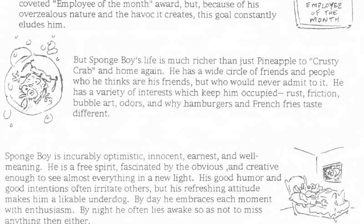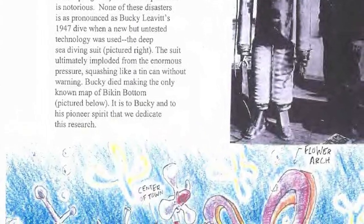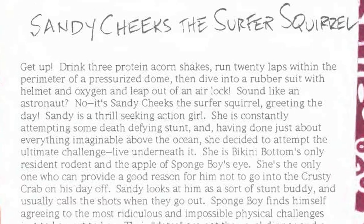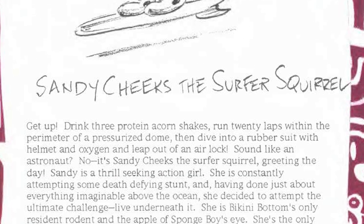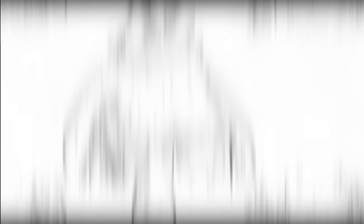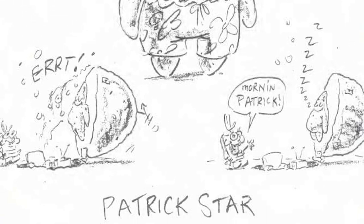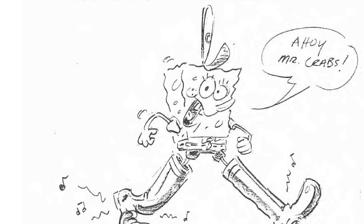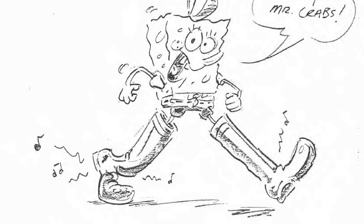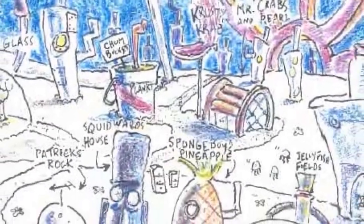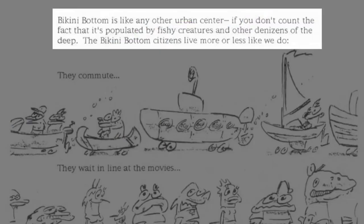As of very recently, Spongebob's pitch bible was revealed to the public. This thing is full of ideas that didn't make it into the final show. For example, the Krabby Patty was originally called the Barnacle Burger. Spongebob and Sandy were also originally meant to have a romantic relationship, which is really funny. Not to mention the fact that Patrick was meant to work at the Chum Bucket. Here's an early map of the town with a lot you can already identify — the Chum Bucket is nearly unrecognizable, though. Bikini Bottom is like any other urban center, if you don't count the fact that it's populated by fishy creatures and other denizens of the deep.